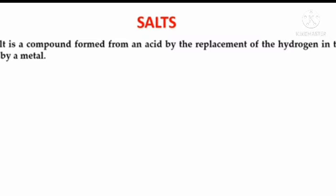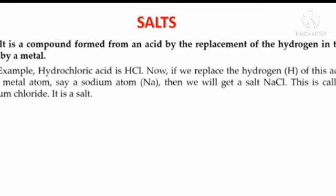A salt is a compound formed from an acid by the replacement of hydrogen in acids by a metal. For example, hydrochloric acid is HCl. If we replace the hydrogen of this acid by a metal, say sodium, then we will get a salt NaCl, which is called sodium chloride. We know that from one acid and base reaction we can find one salt and water molecule.